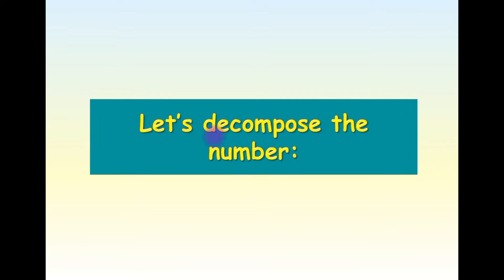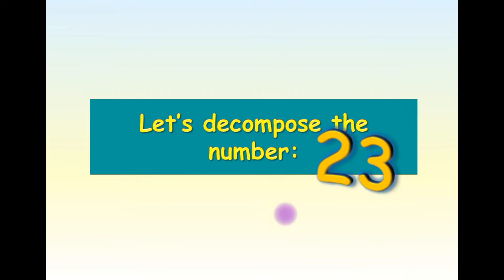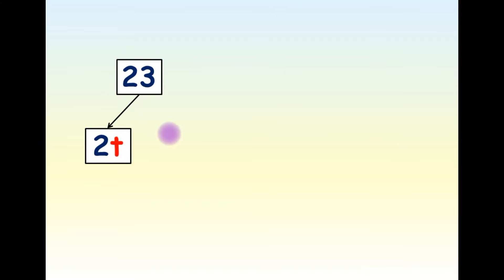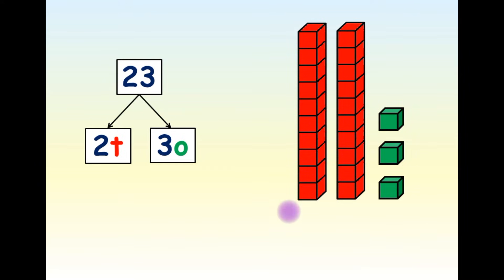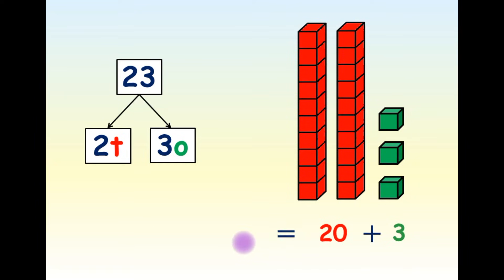Let's decompose the number 23. 23 is made up of 2 tens and 3 ones. We have 2 blocks of tens and 3 cubes of ones. To compose it, we can simply say that 20 plus 3 equals 23.